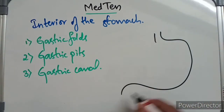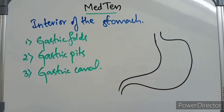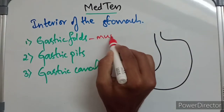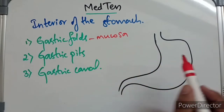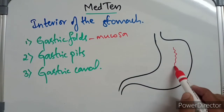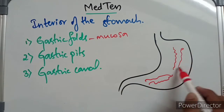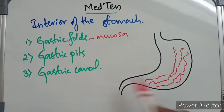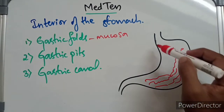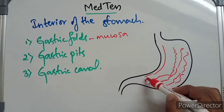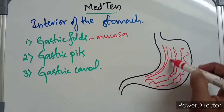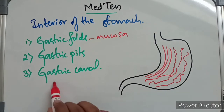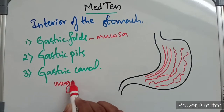This is the stomach. The first thing is the gastric folds - gastric folds are formed by the mucosa of the stomach. They are irregular folds, and longitudinal folds lie along the lesser curvature like this. This is nothing but the gastric canal, or magenstrasse as we call it.